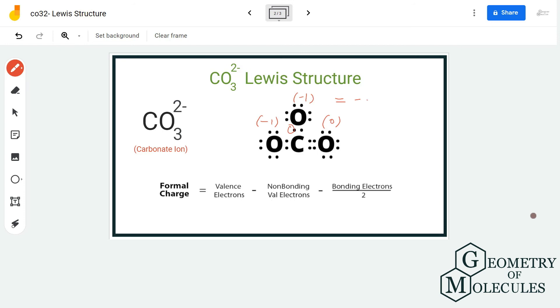In total we have minus two charges, which makes sense because there is a minus two charge on this molecule. So this is the right Lewis structure for CO3^2-.